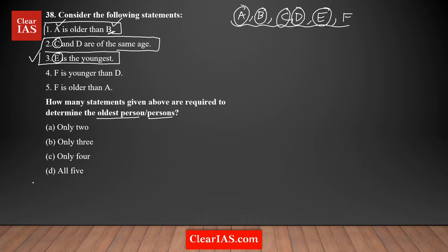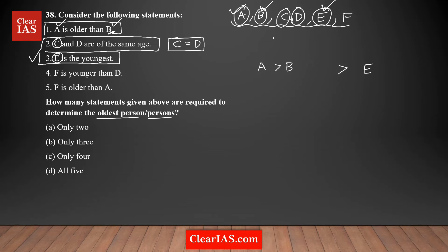So you have information about C, D, B, E, A, and F. From the mandatory statements: E is the youngest, C and D are of the same age, and A is older than B. B is older than E, so among A, B, and E, A is the oldest. But we don't yet know about C, D, and F — we need a connection.